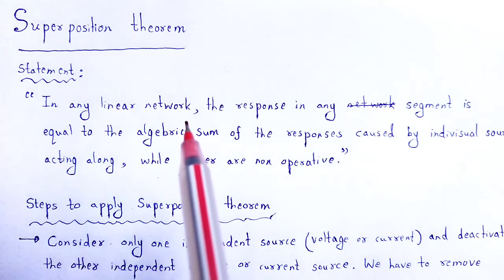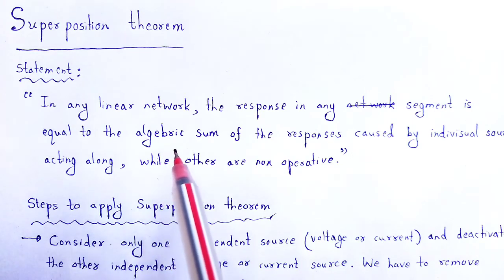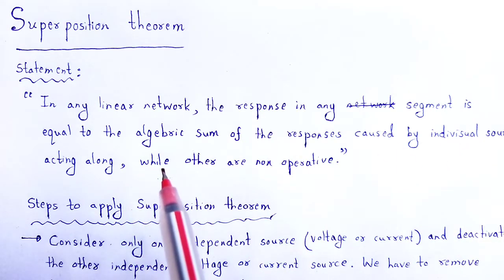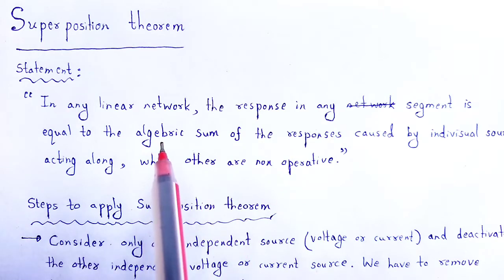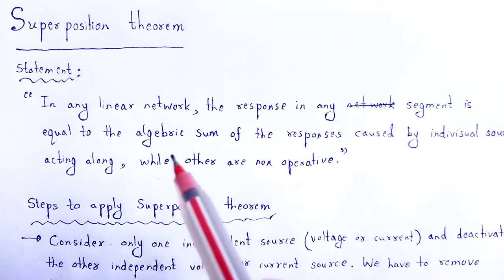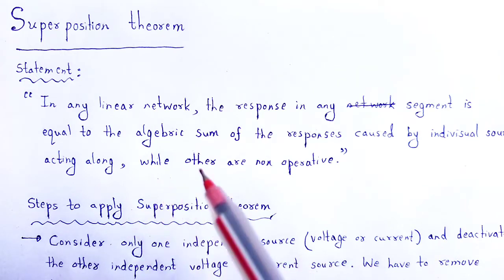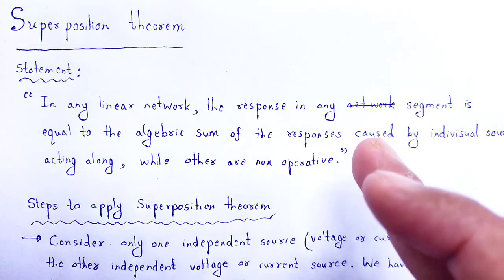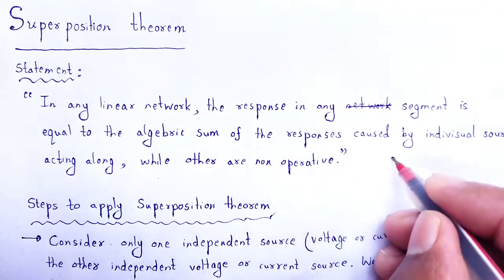According to superposition theorem, in any linear network the response in any segment is equal to the algebraic sum of the responses caused by individual sources acting alone while others are non-operative. This theorem is used to solve a network where two or more sources are involved, and is applicable only to linear networks where current is linearly related to voltage, as in Ohm's law.